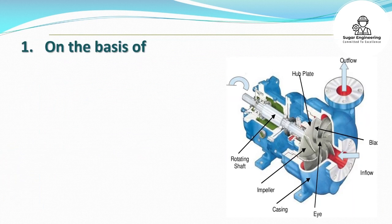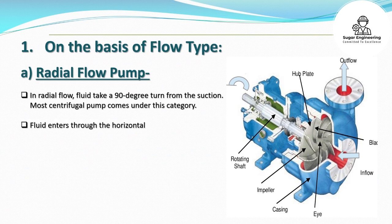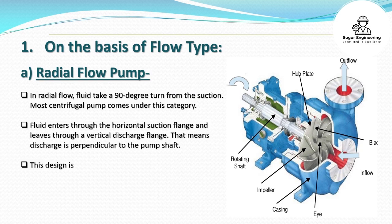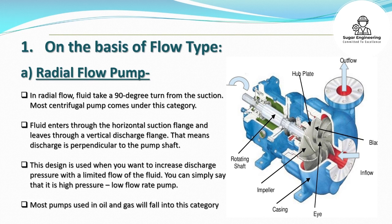On the basis of flow type: A. Radial flow pump. In radial flow, fluid takes a 90-degree turn from the suction. Most centrifugal pumps come under this category. Fluid enters through the horizontal suction flange and leaves through a vertical discharge flange, meaning discharge is perpendicular to the pump shaft. This design is used when you want to increase discharge pressure with a limited flow — it is a high pressure, low flow rate pump. Most pumps used in oil and gas fall into this category.